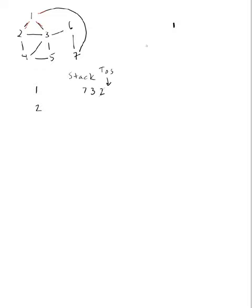After popping 2, the stack is now 7 and 3. I push 2's children onto the stack: 3 is already on the stack, and 1 has already been visited, so I push only 4. Then I pop 4 off the stack — 4 is the child of 2. I push 4's children: 3 is already present, so I add only 5 as a new stack element.